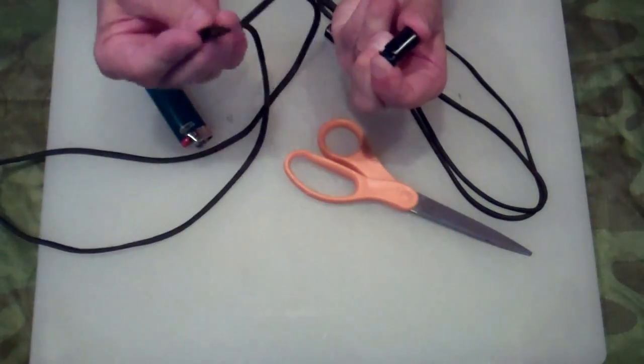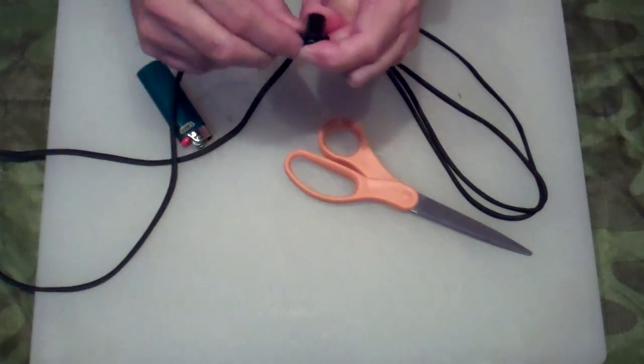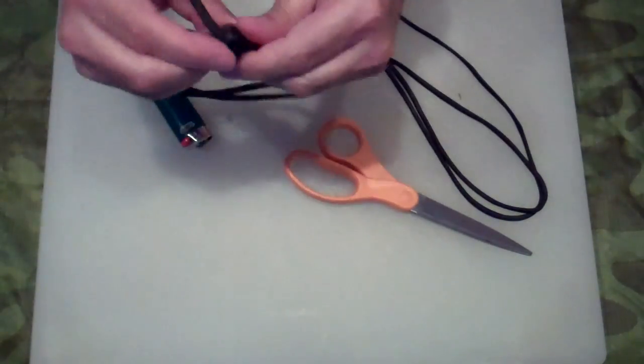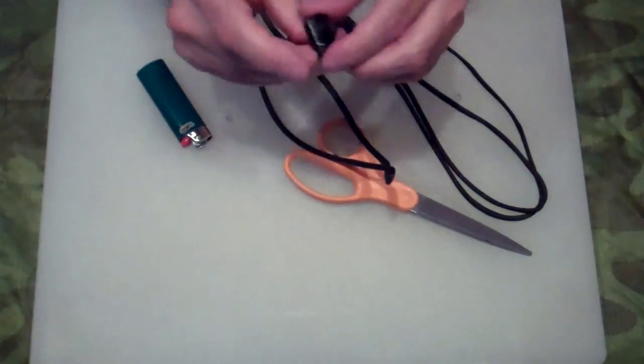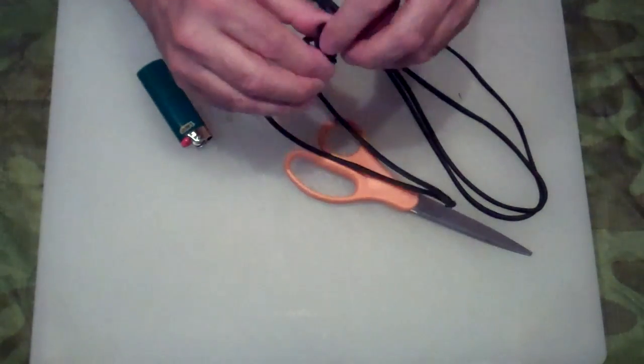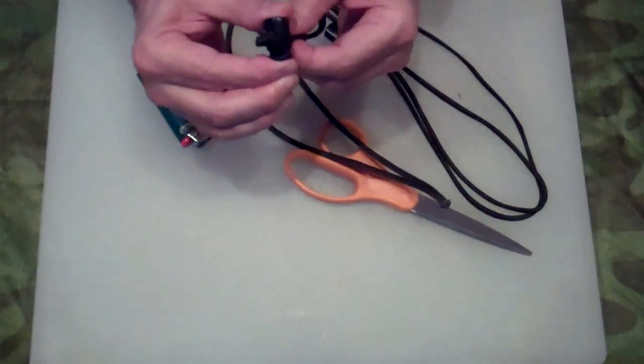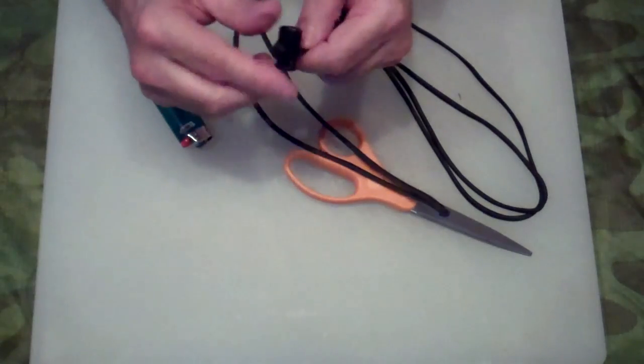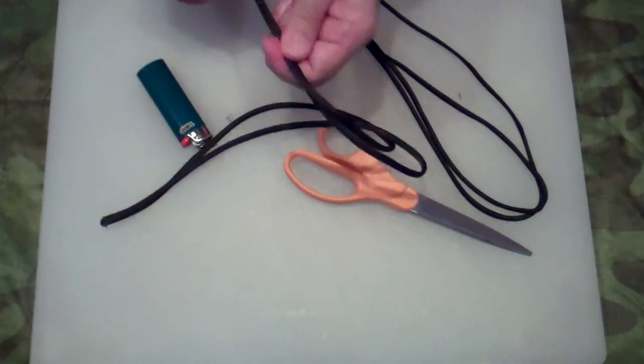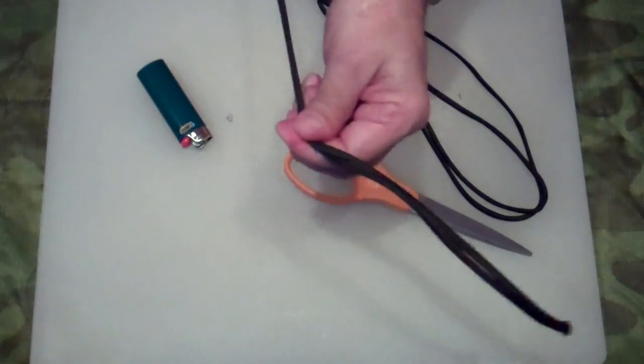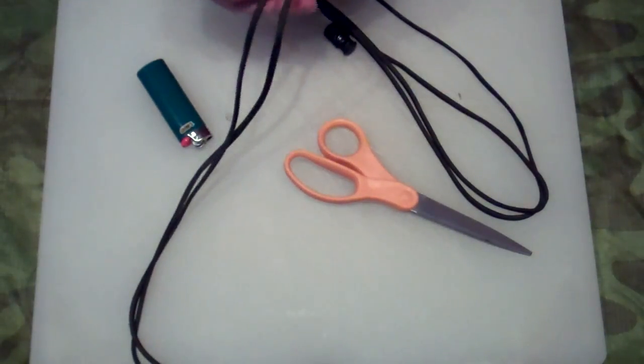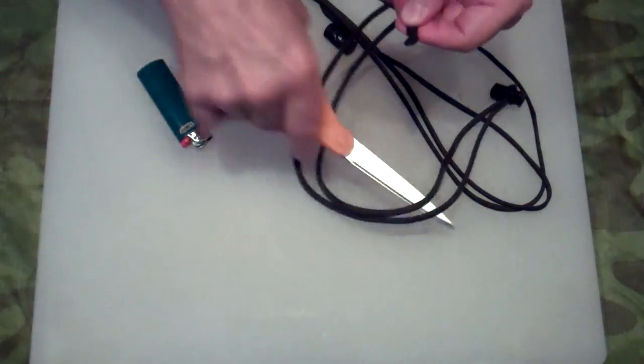So you just take the fused end, stick it through the barrel lock, slide that all the way down to your barrel knot in the center there. Dress it up. And now I'm just going to flatten that paracord out right out to the end. Make sure there's no twists. I'm going to cut the end.